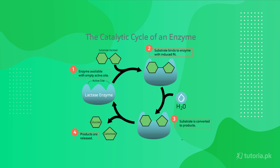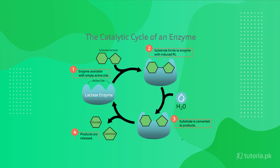The drawback of the lock and key model was that it could not explain the activity of all enzymes. That's why in 1959, Koshland proposed another model called the induced fit model. According to this model, the active site of the enzyme is flexible, and as soon as the substrate attaches, the shape changes according to that substrate. As shown in the diagram, the substrate molecule induces a slight change in the shape of the active site so that the molecule attaches perfectly. This flexibility allows the enzyme to carry out more than one type of related reactions.